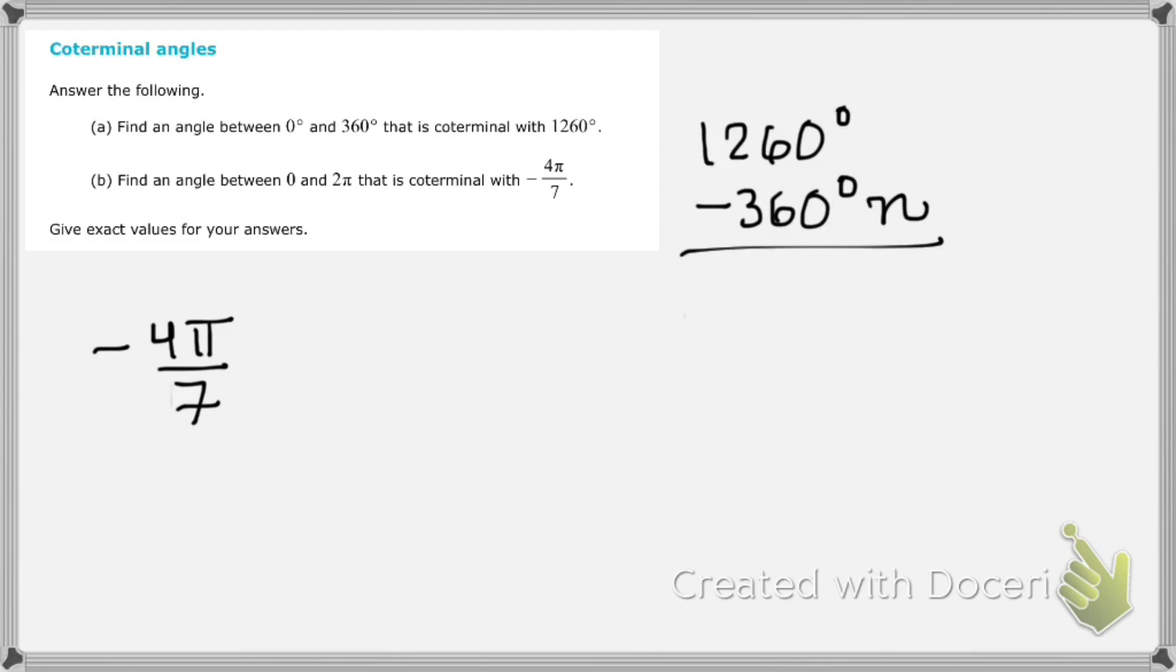Now see if you can extrapolate that and apply that to radians and also the fact that this is negative. Obviously if I'm coming from a negative value, I need to add, and if I'm talking in radians, I can't add 360. I have to add 2π. So I'm going to add 2πn until I get to an angle measure that is between 0 and 2π.